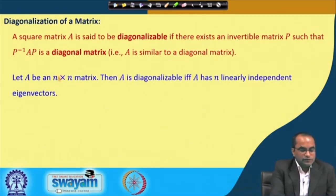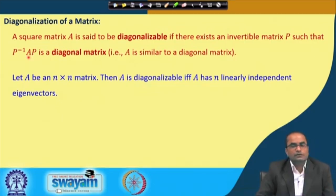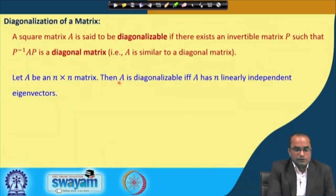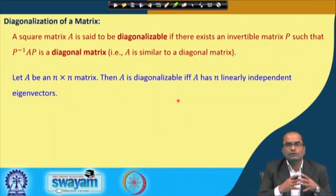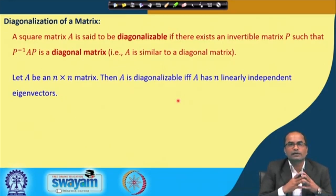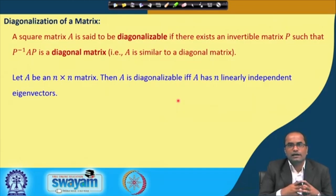Let A be an n×n matrix. The key result is: A is diagonalizable if and only if A has n linearly independent eigenvectors. If we can find n linearly independent eigenvectors, then A can be diagonalized. If we cannot find n linearly independent eigenvectors, then A is not diagonalizable.